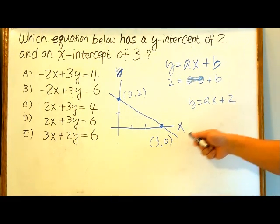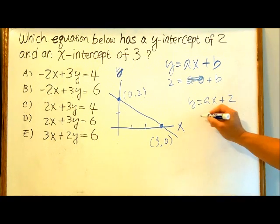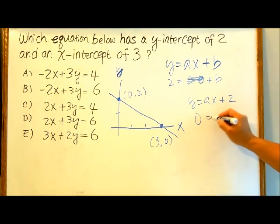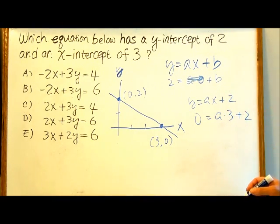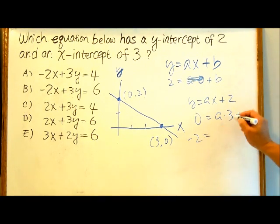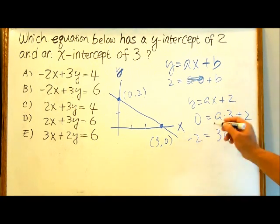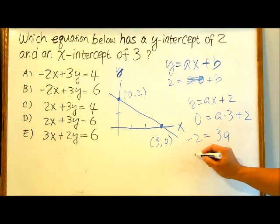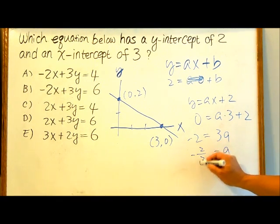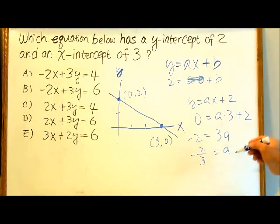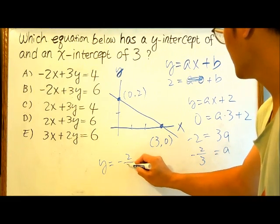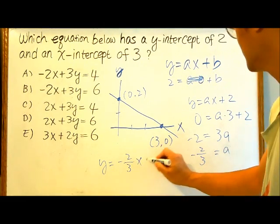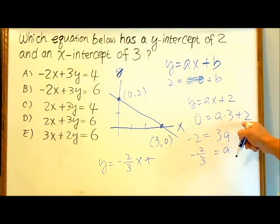Now let's use this point to solve for a. So y is 0, equals a times 3 plus 2. Let's subtract 2 on both sides. Now we've got 3a equals negative 2. Divide by 3 on both sides, a equals minus 2 over 3. So we have the equation y equals minus 2 over 3 x plus 2.